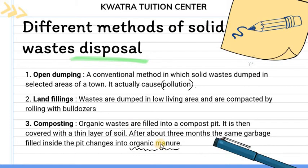The third method is composting. In the composting method, you dig a pit, put solid waste and garbage into it, and stop it for 3 to 4 months. The solid waste then gets converted into organic manure. So we use organic waste to form organic manure, which is useful for the soil.